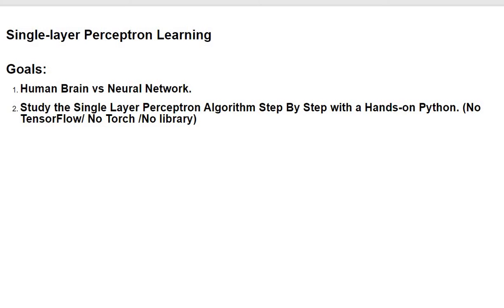Welcome to single layer perceptron learning. The goals for this video are to quickly summarize the human brain versus the neural network and get some motivation for why neural networks are modeled after the human brain. The second important piece is understanding the perceptron algorithm. We will code it up ourselves in Python without using any libraries like TensorFlow or PyTorch, to really understand what's going on in a single layer perceptron algorithm.